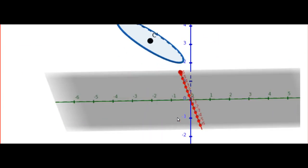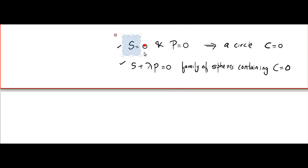And if you want more pictures, you can look at this. This is the circle. If you have a sphere S equal to 0 and a plane P equal to 0, a circle will be formed. For the time being, let us call the circle as C equal to 0.